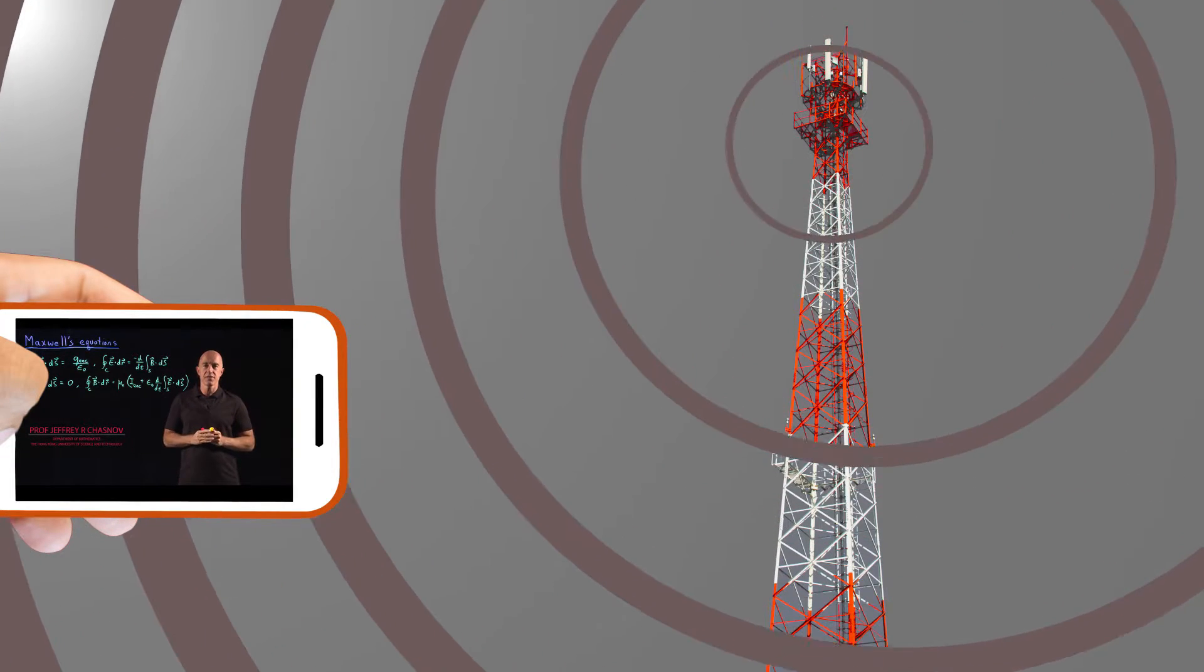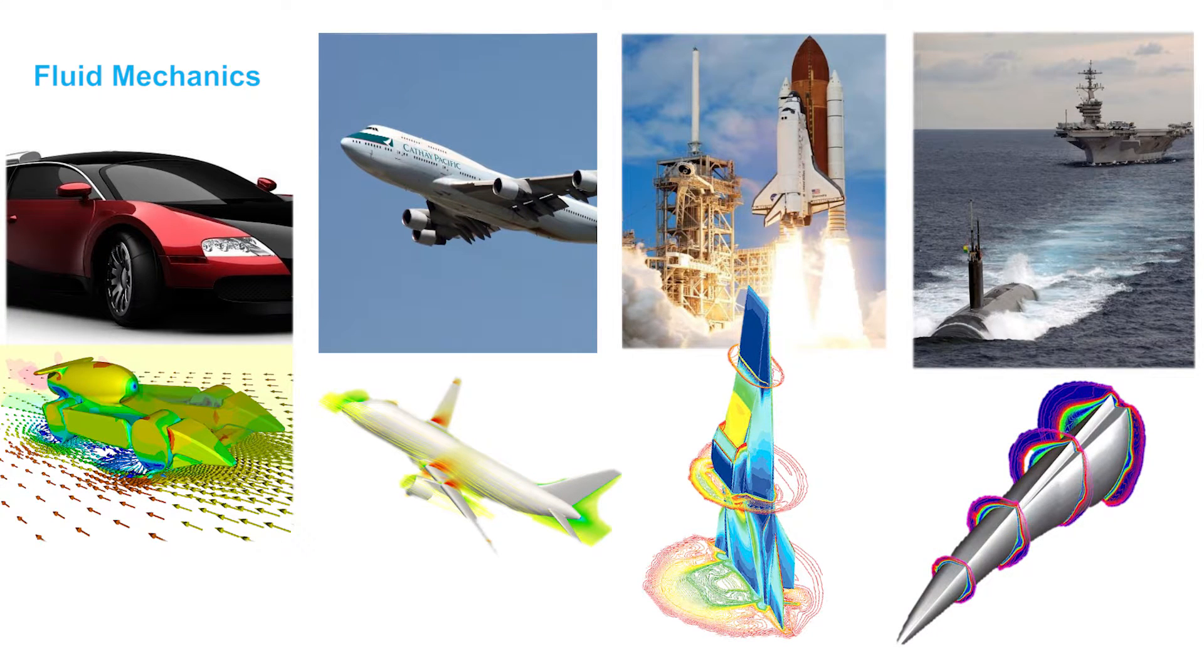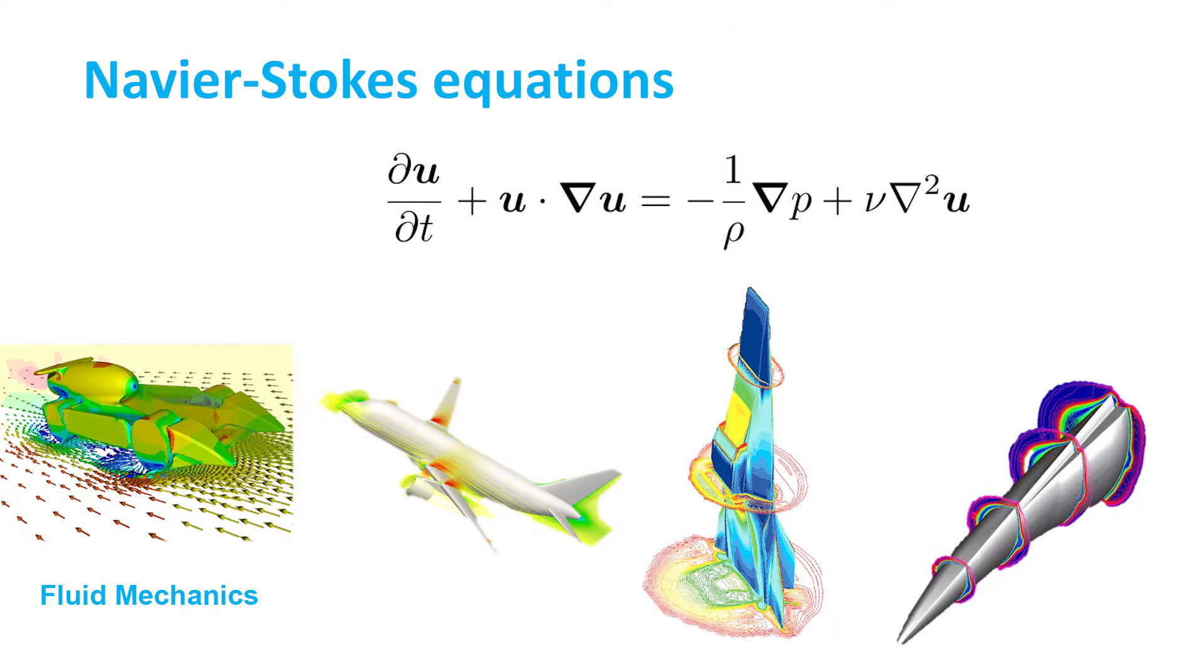Cars, planes, and rockets operate in the fluid that we call air. Ships and submarines operate in the fluid that we call water. And to understand the basic principles of fluid mechanics you need to study the Navier-Stokes equations, also written in the language of vector calculus.